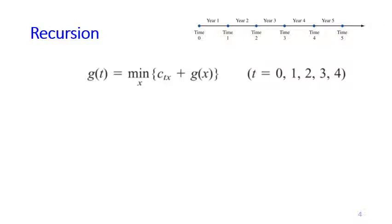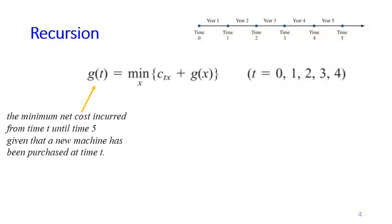Here's the alternative function to define the recursion. g(t) is the minimum net cost incurred from time t until time 5, given that a new machine has been purchased at time t. For each point of time 0, 1, 2, 3, 4, we always assume that we purchase a new machine at time t. The exception is at time 5 because this is the end of the problem, so obviously we must not purchase a machine there.